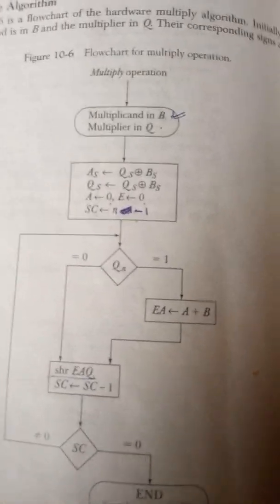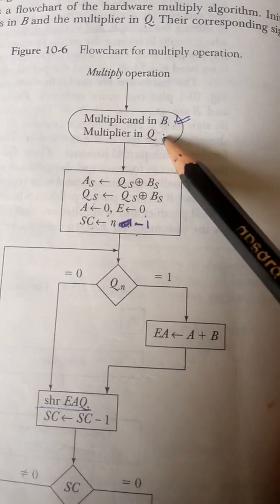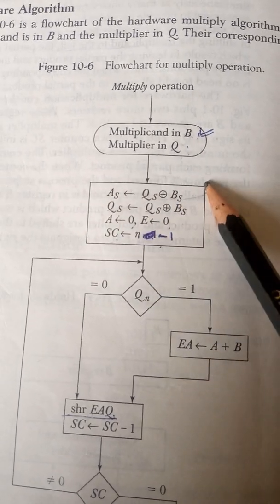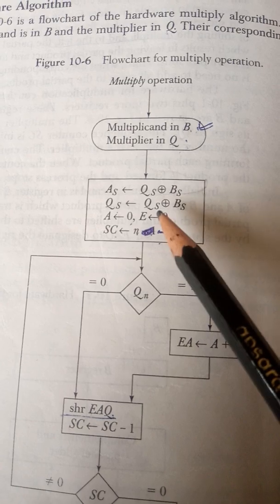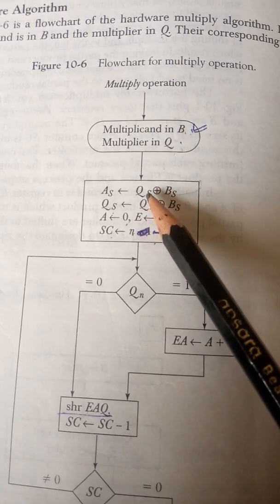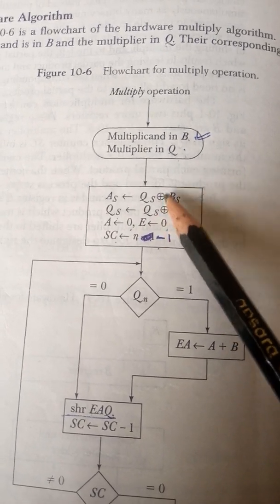So here you can see the flowchart. Multiplicand in B and multiplier in Q. So first of all you decide the sign bit of the result. How to decide the sign bit? QS and BS.